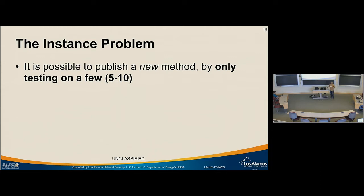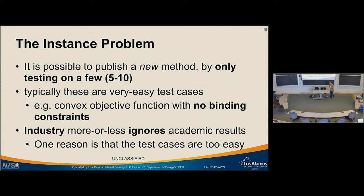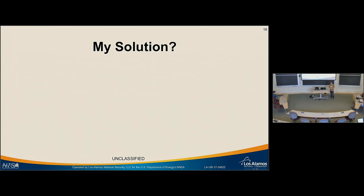The other issue is the instance problem. It's possible to publish by only testing on five to ten input networks. Unfortunately, those test cases have been very easy—they'll have a convex objective function with no binding constraints at the optimal point, an extremely friendly type of input. Industry is more or less ignoring results coming out of academia, partly because the test cases are either too small or too easy. They just say, 'It doesn't apply to our problem—who cares?'